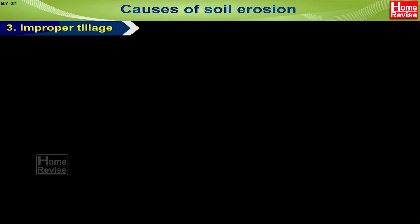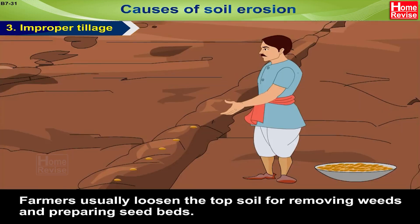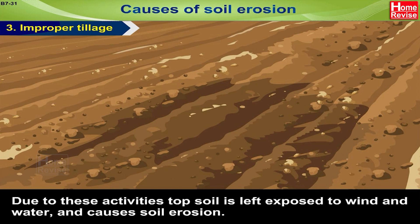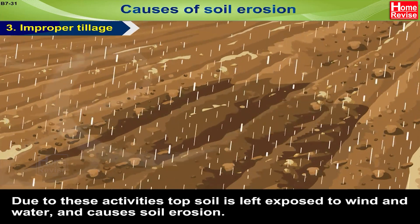Improper tillage: farmers usually loosen the topsoil for removing weeds and preparing seed beds. They sometimes leave the field fallow — that is, without sowing any crop — for a long period. Due to these activities, topsoil is left exposed to wind and water and causes soil erosion.